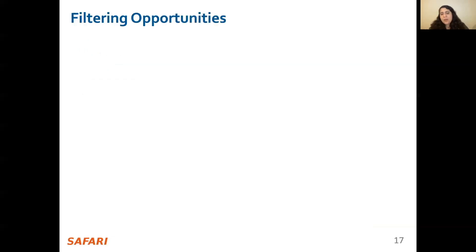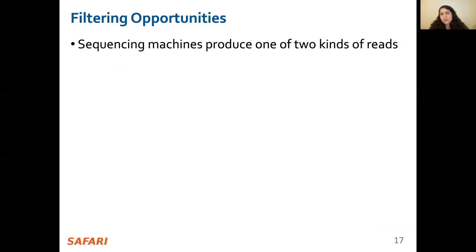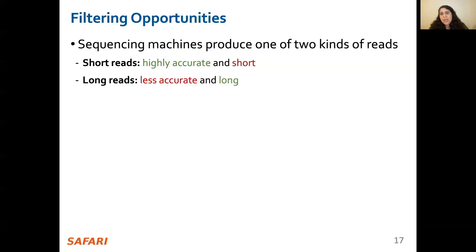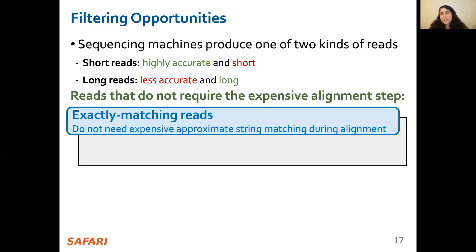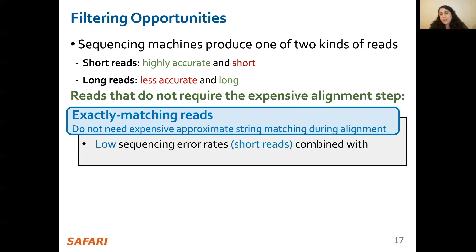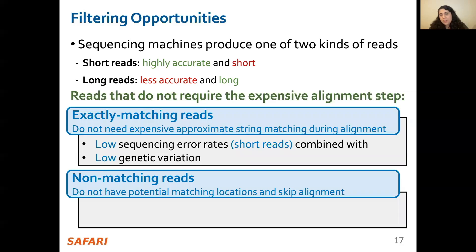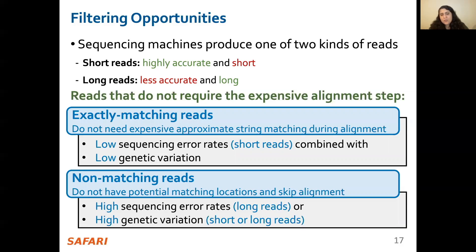Let's take a closer look at filtering opportunities based on the features of the genomic input read sets. Sequencing machines produce one of two kinds of reads: short reads that are highly accurate but short (e.g., up to a few hundreds of DNA characters), and long reads that are less accurate but long (e.g., from hundreds to millions of DNA characters). Based on these, we leverage two filtering opportunities. First, we filter exactly matching reads, which match exactly to one or more subsequences of the reference genome and do not require approximate string matching during alignment — these can frequently occur in short read sets with low sequencing errors and low genetic variation. Second, we can filter non-matching reads, which have no potential matching locations in the reference genome and therefore skip the expensive alignment step — these frequently occur in long read sets with high sequencing errors or with high degrees of genetic variation.